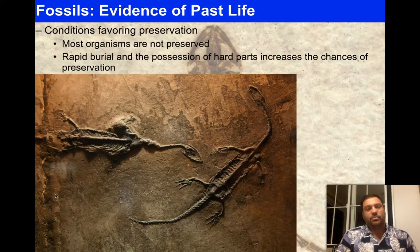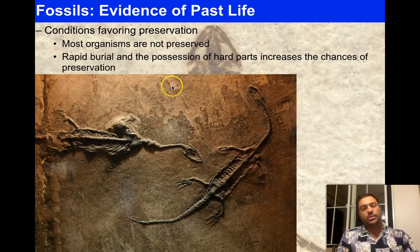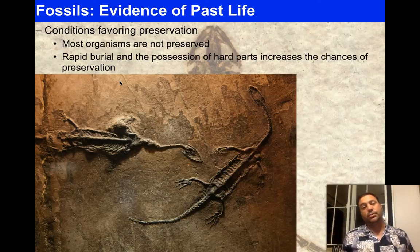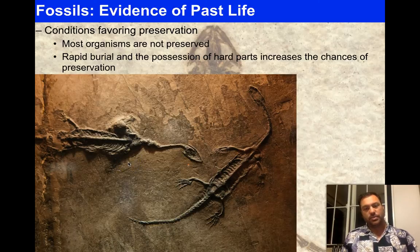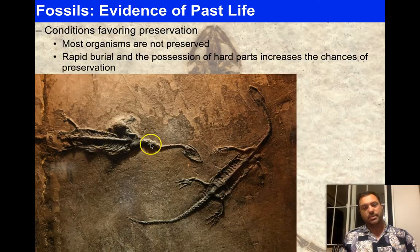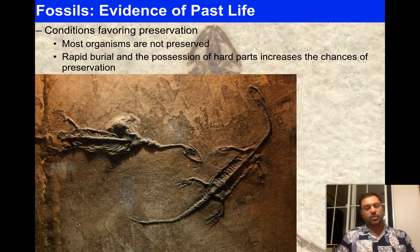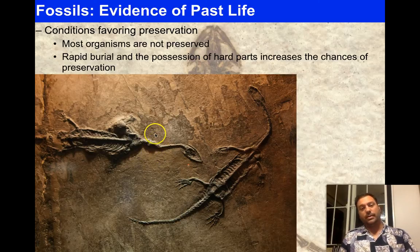Certain conditions favor preservation — most organisms are not preserved. You need rapid burial and hard parts to increase the chances. It also helps if a body falls into a zone with no oxygen, where nothing can live to eat it. Here we see two small dinosaurs that have fallen into a sedimentary deposit next to each other — you can see the ribs, spinal cord, long necks, and even the small intricate details of their hands and feet. They had hard parts and were deposited in siltstone, giving everything needed for good preservation.